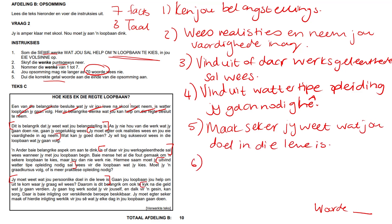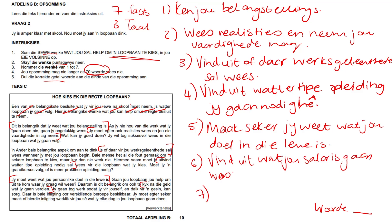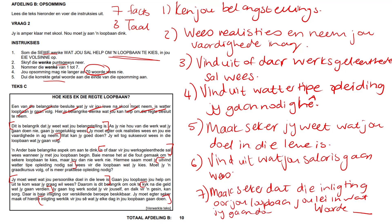The next tip: 'Kyk na die geld wat jy gaan verdien' — find out what your salary will be. And the last tip is to make sure the information you find will tell you what you're doing in your career every day. So: 'Maak seker dat die inligting oor jou loopbaan jou lei in wat jy gaan doen.' And that's your seven points — just like that. Always start with the verb. Please count and write down the word count; they want to see that. Seven marks for facts, three marks for taal.